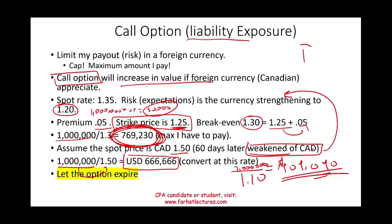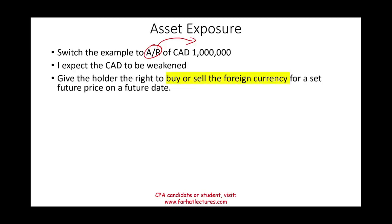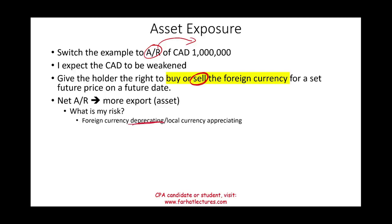Now let's switch from a liability to an asset exposure — accounts receivable. Assume you sold to a Canadian company and are expecting to receive 1 million Canadian dollars, and you expect the Canadian dollar to weaken. Your risk is now different: you have an asset, and the risk is the foreign currency depreciating. You would buy some sort of forward contract or put option that gives you the right to sell the currency at a set price at a future date.